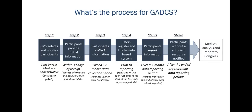This next slide walks through a high-level GADCS process. The exact dates for different groups of organizations selected at different times do differ, and there are some choices organizations have about when some steps start. Starting with step one, CMS selects cohorts of organizations and notifies those ground ambulance organizations. CMS has now done this a total of four times, selecting four different cohorts referred to as year one, two, three, and four.